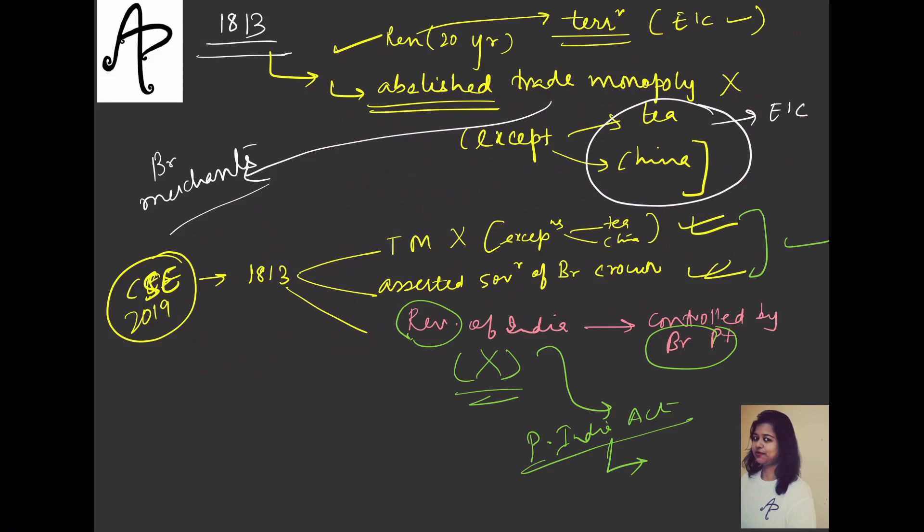So this is one thing about the 1813 Act. Apart from that, there are some other things which we will see in provisions. EIC's control over revenue, administration and all that was kept untouched - they were doing it in the same way. One important thing that they tried to do here - sorry, this was not in the PYQ, I am just giving additional points for this Act.